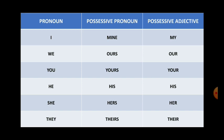We can say: 'This house is ours' or 'This is our house.' For the pronoun 'you,' the possessive pronoun is 'yours' and the possessive adjective is 'your.' For example: 'These specs are yours' or 'These are your specs.' For the pronoun 'he,' the possessive pronoun is 'his' and the possessive adjective is also 'his.' For example: 'This bag is his' or 'This is his bag.'